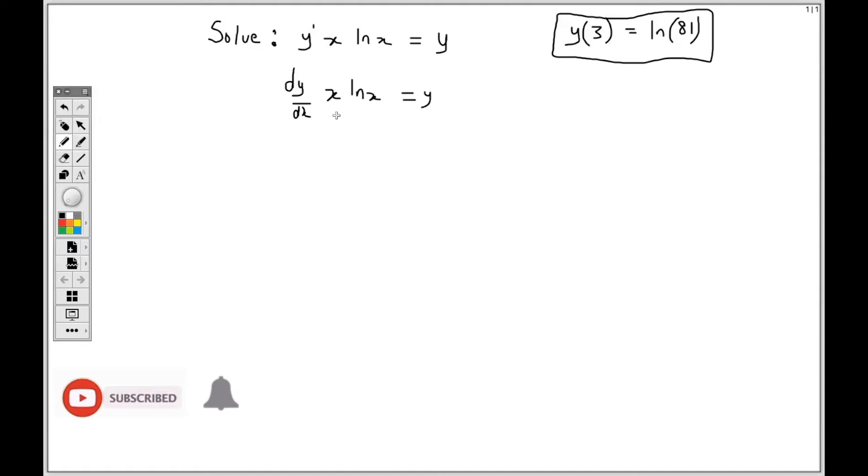Now separation of variable means getting x on the right and y on the left. So I'll be carrying the dx over the equal sign. So what I'm left with is dy times x lnx is equal to y times dx. Now the next step is to get x lnx over to my right. So to do that, I will divide both sides by x lnx.